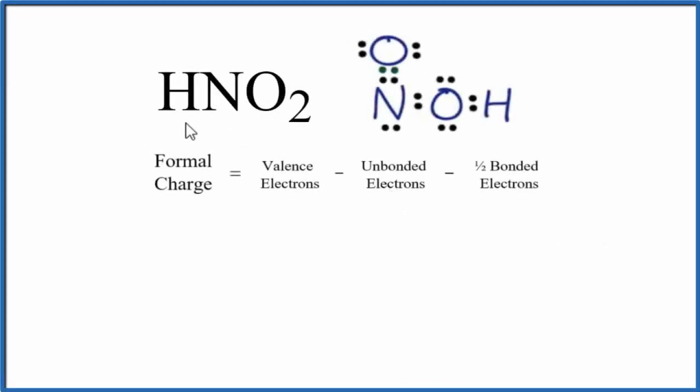To find the formal charges for each element in HNO2, we'll use the Lewis structure here and this formula. So let's take a look and figure out the formal charge for this oxygen up here first.